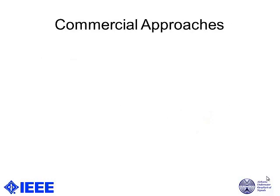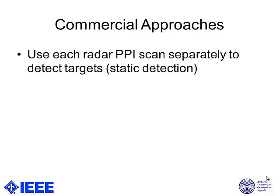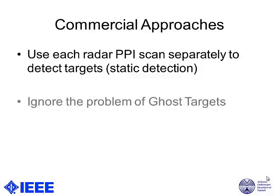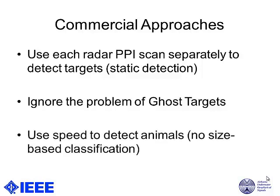The existing commercial approaches process each radar PPI scan separately as static detection — detecting targets in each scan and then tracking them over time. Commercial approaches ignore the problem of ghost targets, treating them as true targets and reporting them as such. They also detect only point targets with no size-based classification, so the problem is that slow-moving vehicles can also be classified as animals.